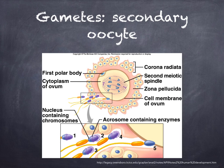In this diagram you can see fertilization taking place at the bottom. The sperm is penetrating a layer of cells around the secondary oocyte called the zona pellucida, which we'll look at in the next topic.